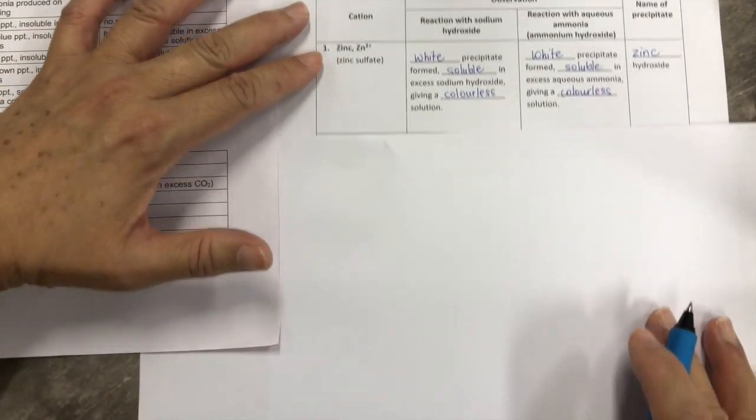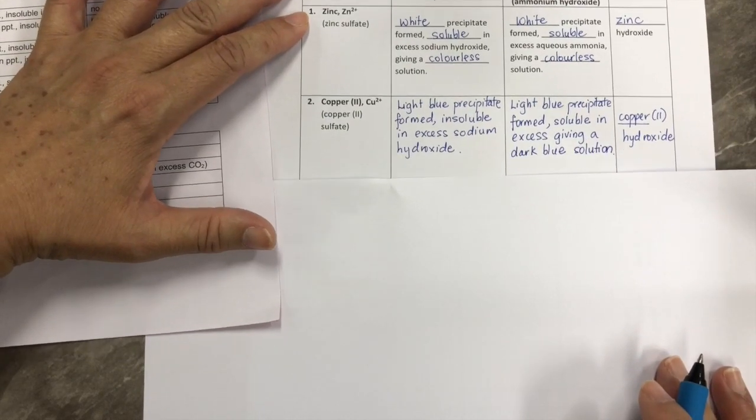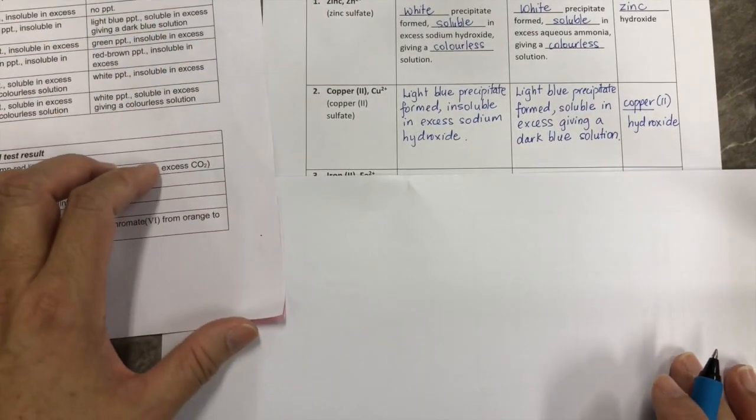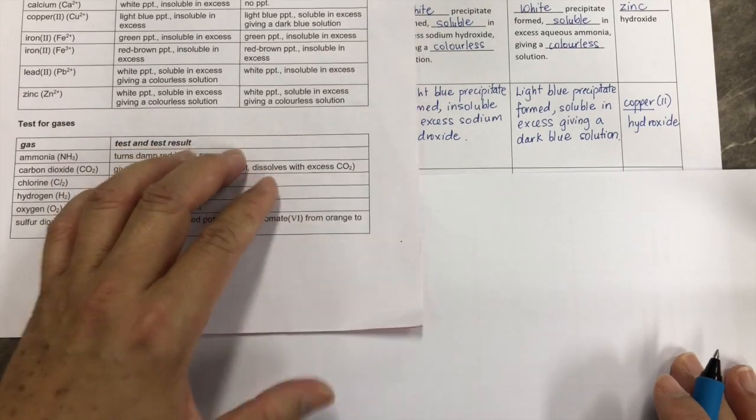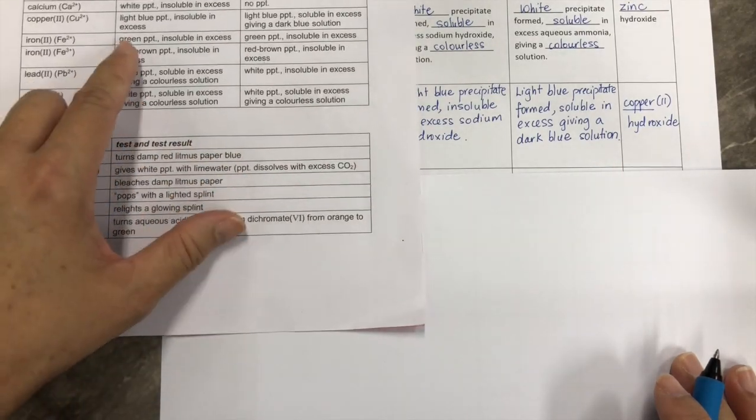Okay, let's do another example, which is copper. Again, look at your QA practical notes under copper.